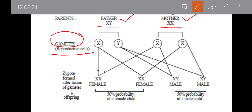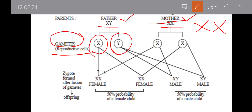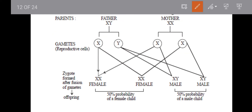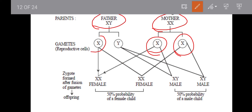The father produces two types of sperm: X-containing sperm and Y-containing sperm. In the mother's case, she has XX chromosomes, so she produces only X-containing ovum. Females are homogametic, while males are heterogametic. Males produce 50% sperm containing the X chromosome and 50% sperm containing the Y chromosome.